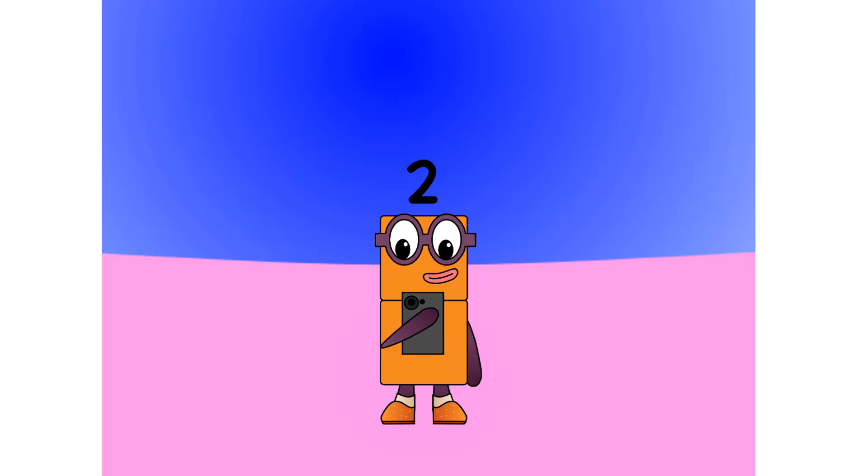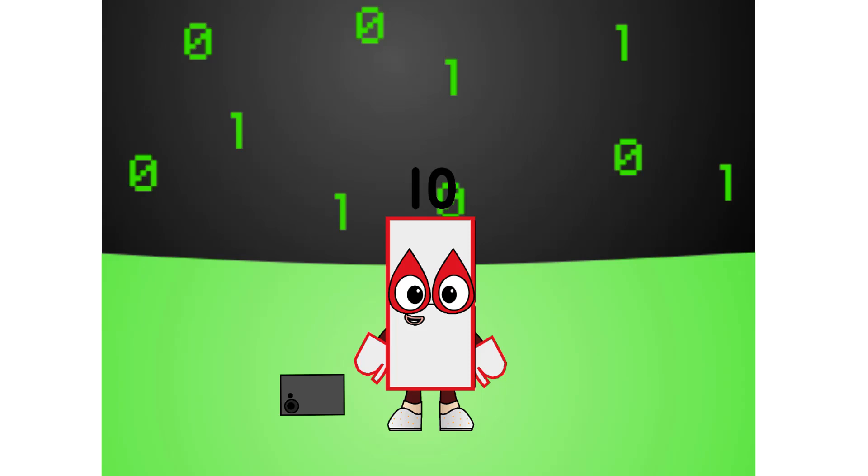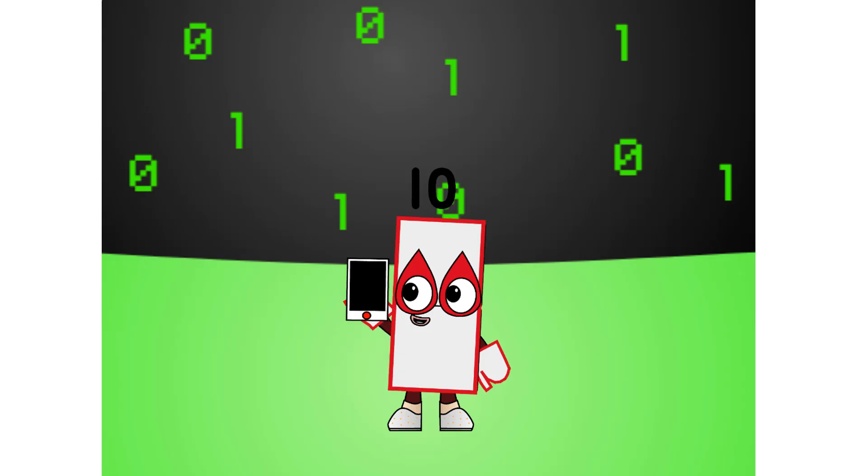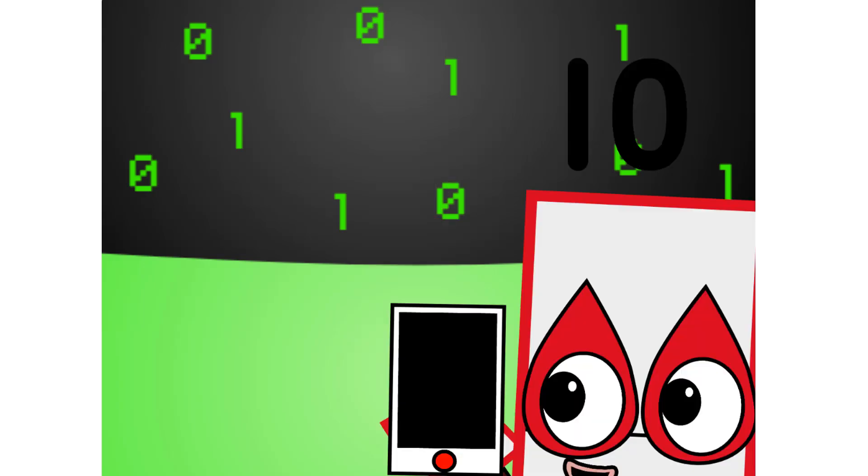But what if there were only 2 digits? Let's think of it this way. Wait, what's happening? Strange. Looks like I have become 1 with the tens. Since I am no longer 2, I will have to say that binary is the base for data, like this phone. So, there are only 2 digits in binary. 0 and 1.